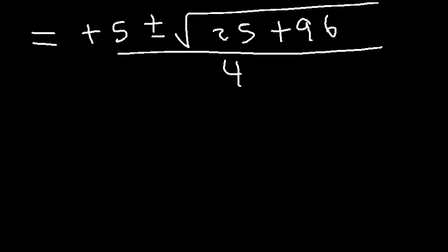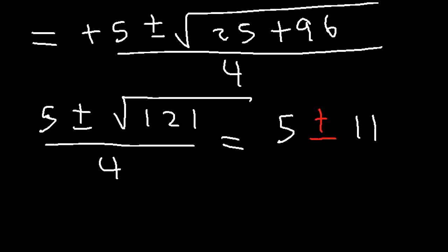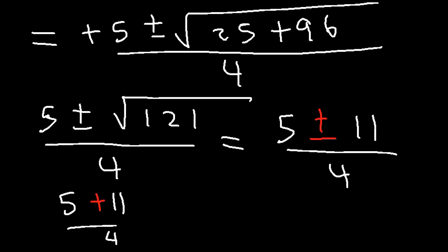Now what is 25 plus 96? Well, 90 plus 20 is 110, and 5 plus 6 is 11, so 110 plus 11 is 121. The square root of 121 is 11. So we have 5 plus or minus 11, divided by 4. Now we'll write two equations: the first is 5 plus 11 over 4, and the second is 5 minus 11 over 4.